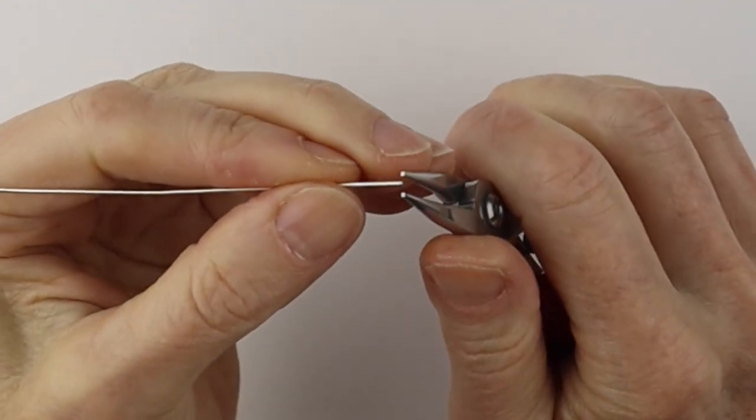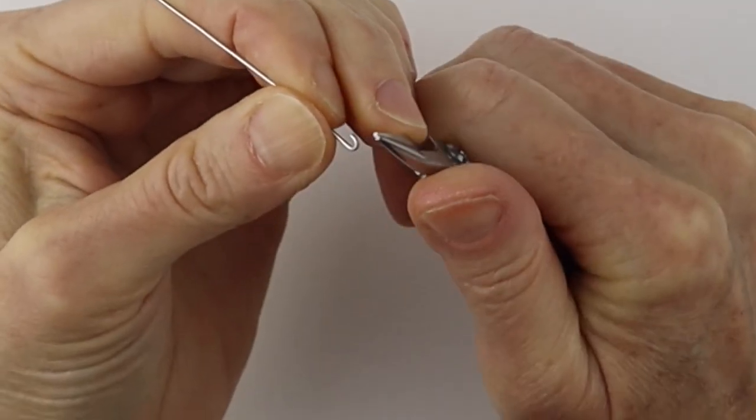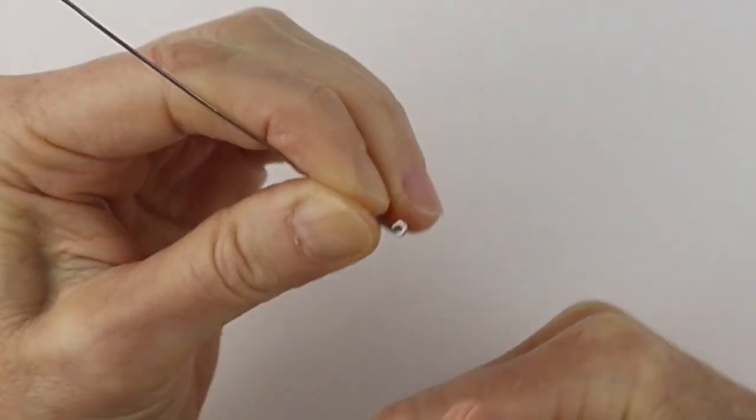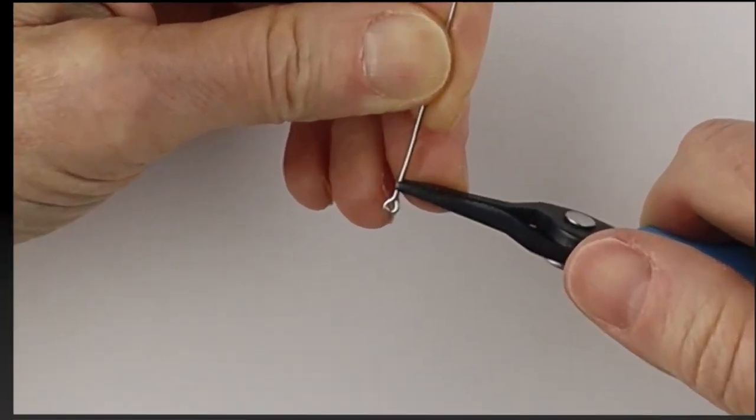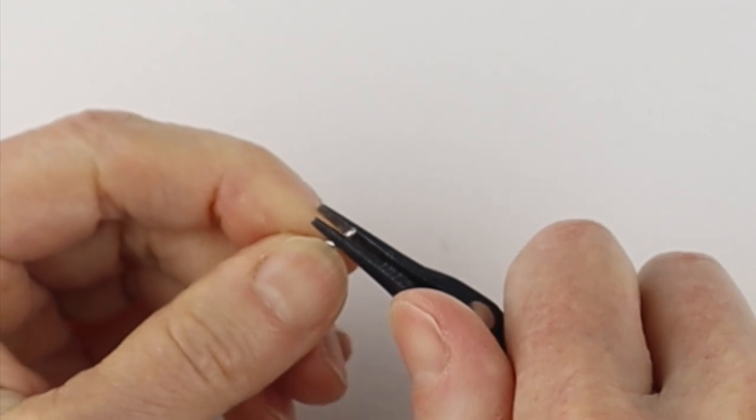For the martini glass, I'm going to start with the olive and just take the end and wind it around to make a very small circle. And then we're going to bend it back. For the stick, we're just going to bend this to the back and pinch it in.